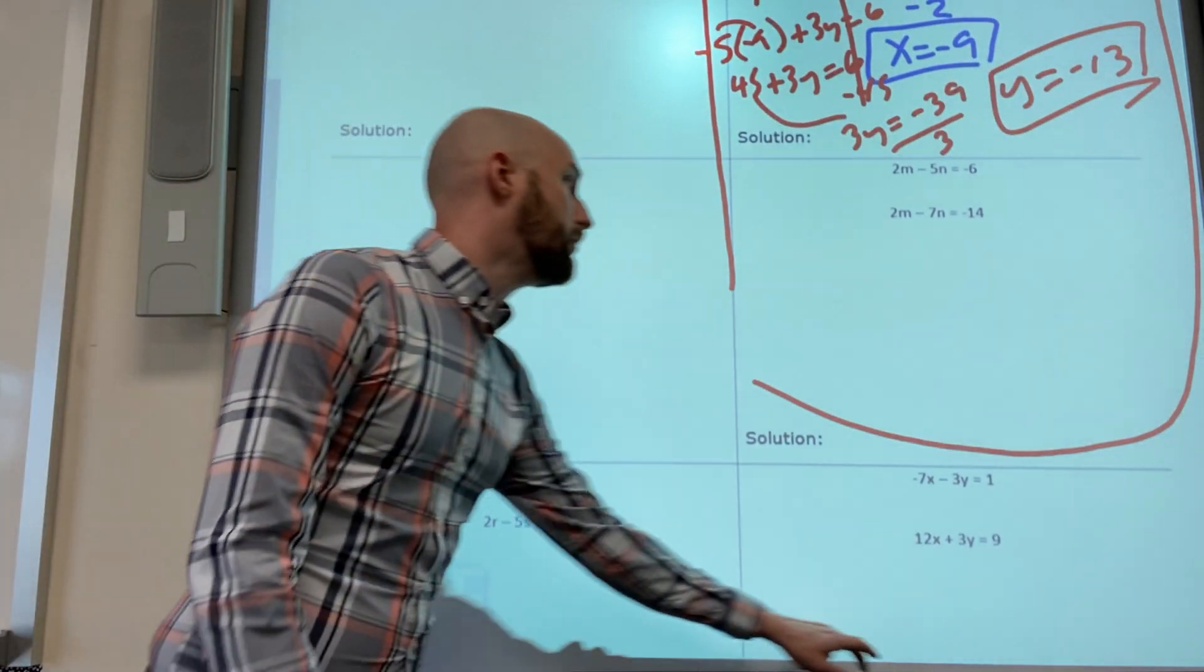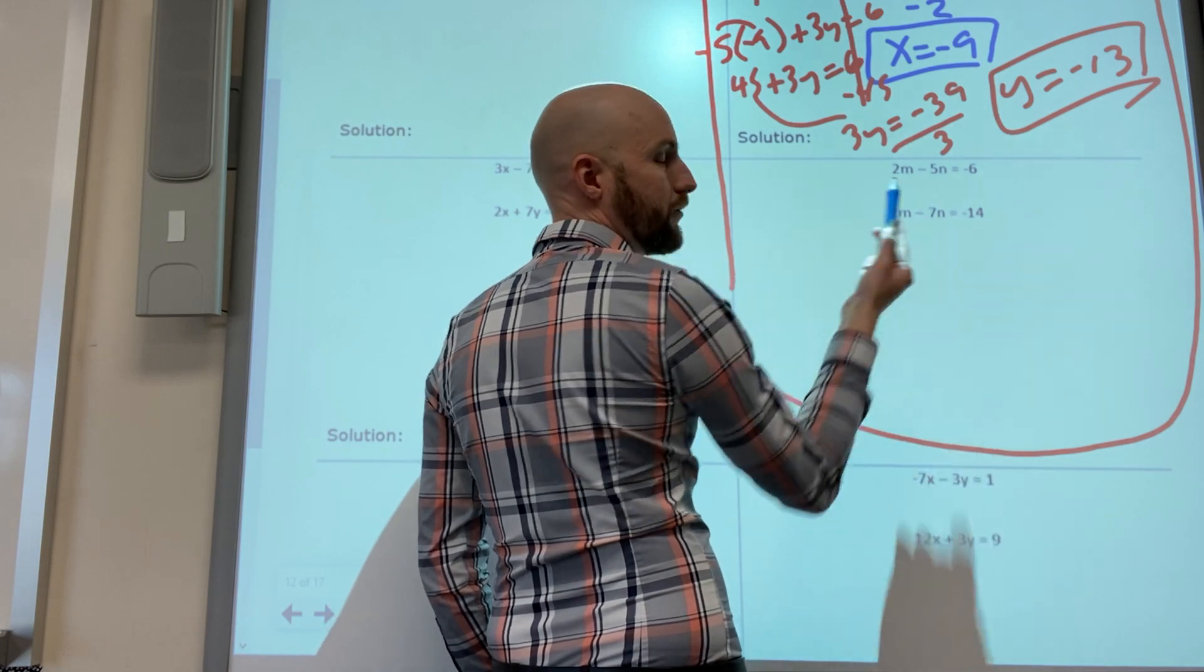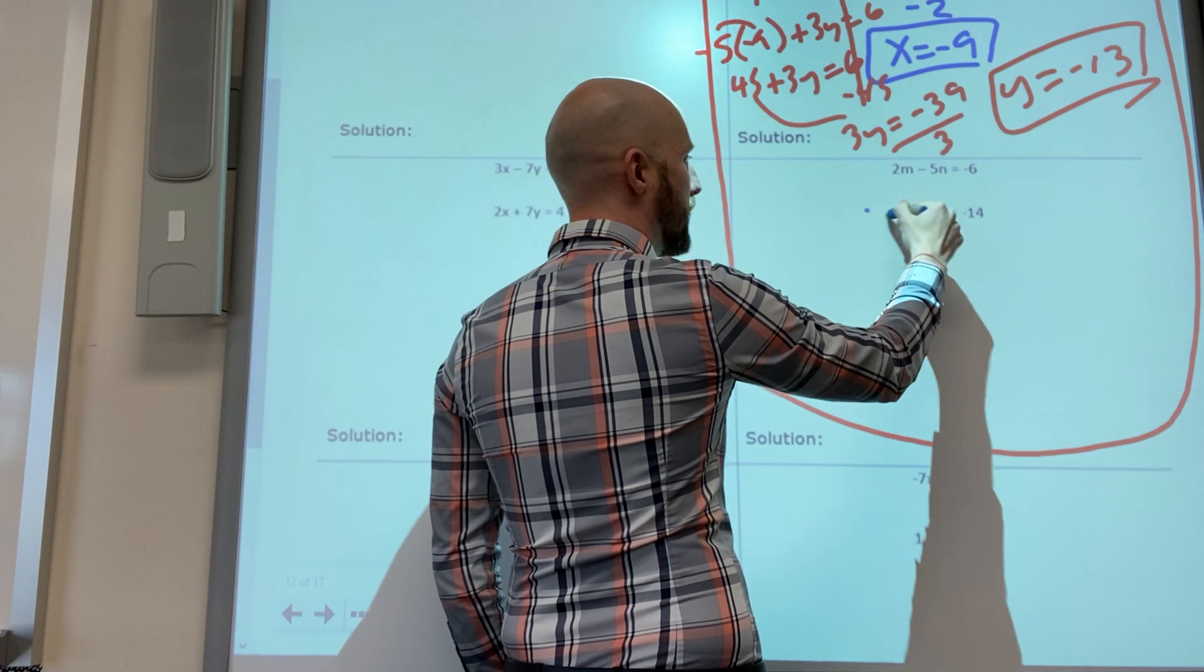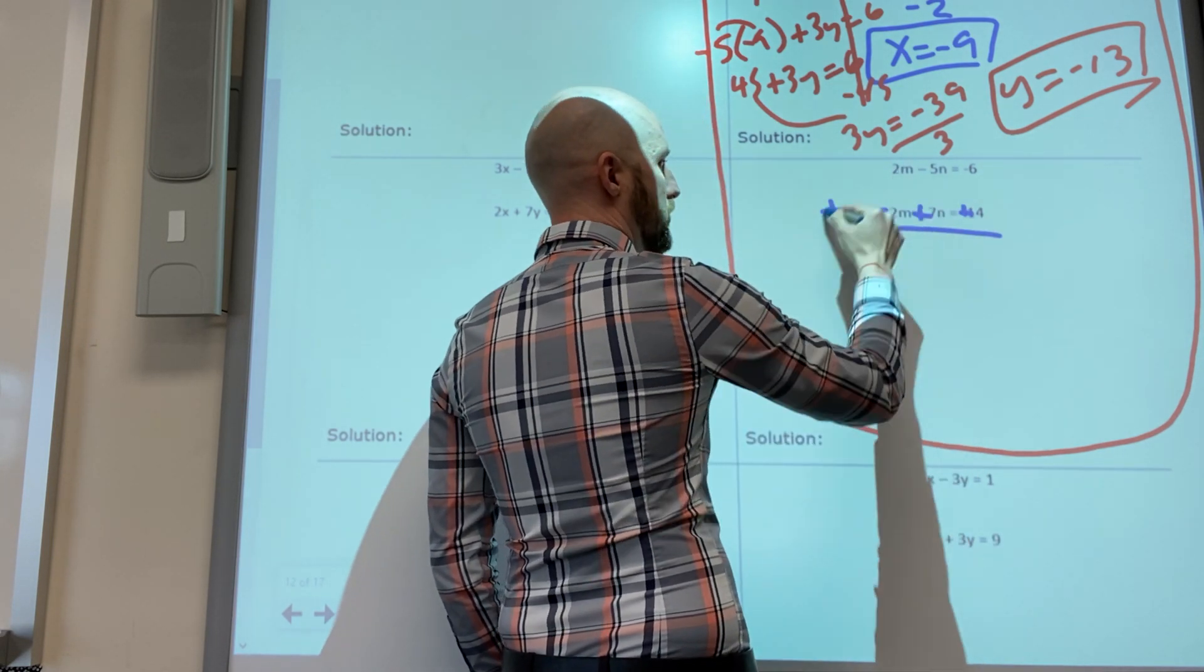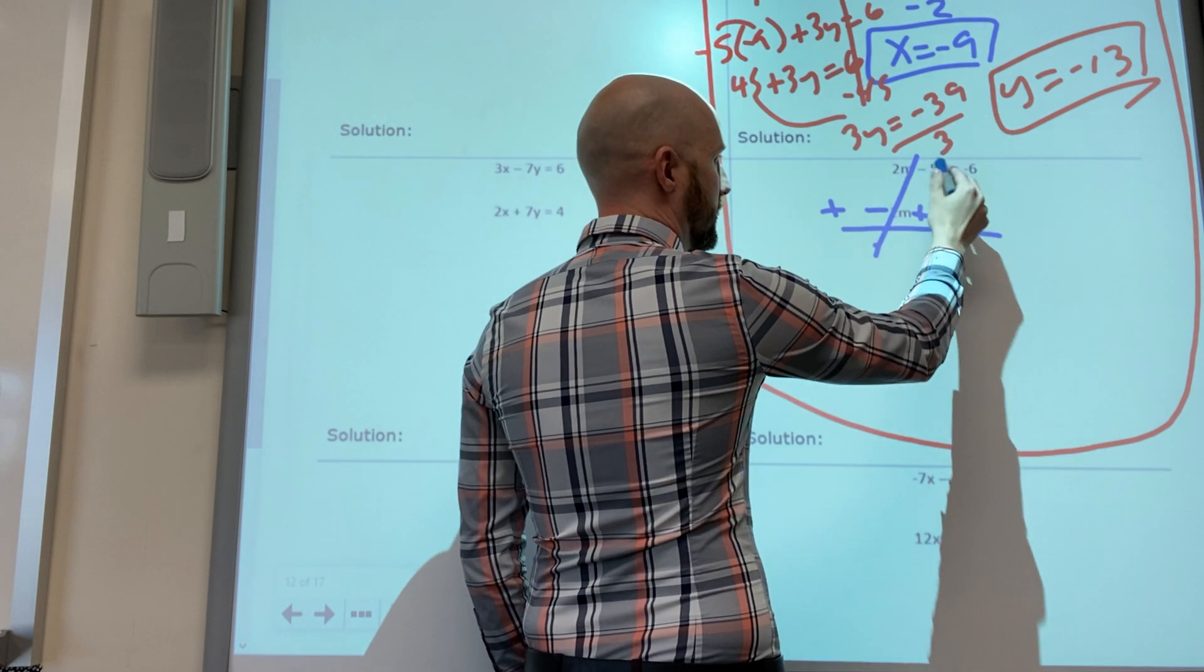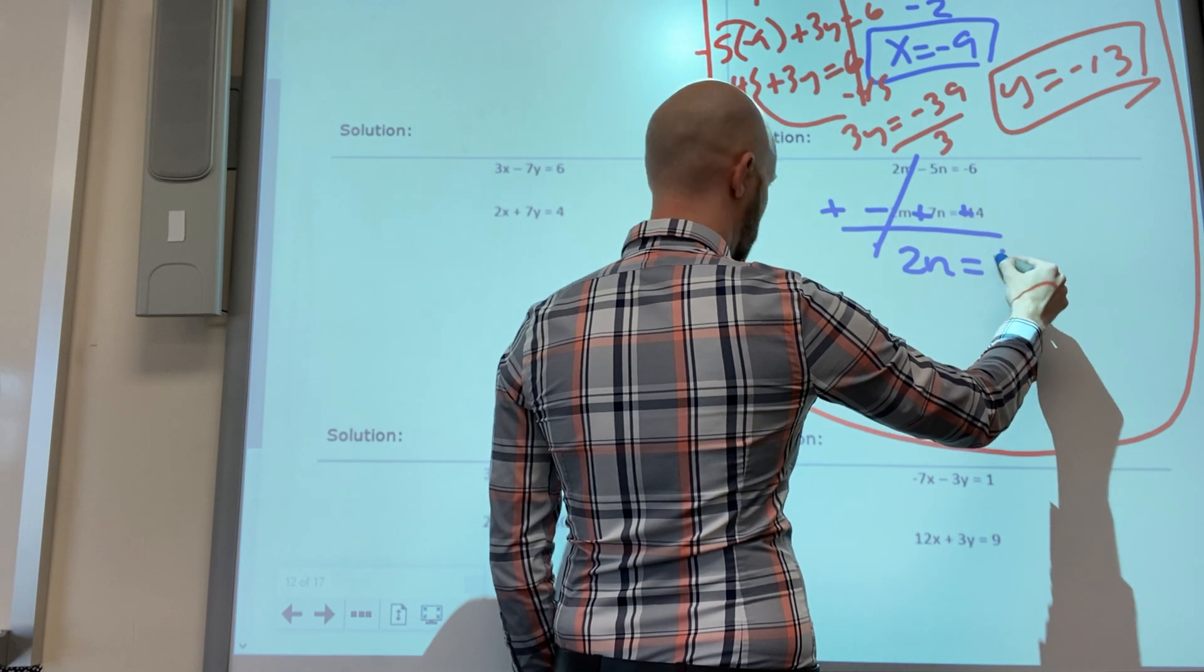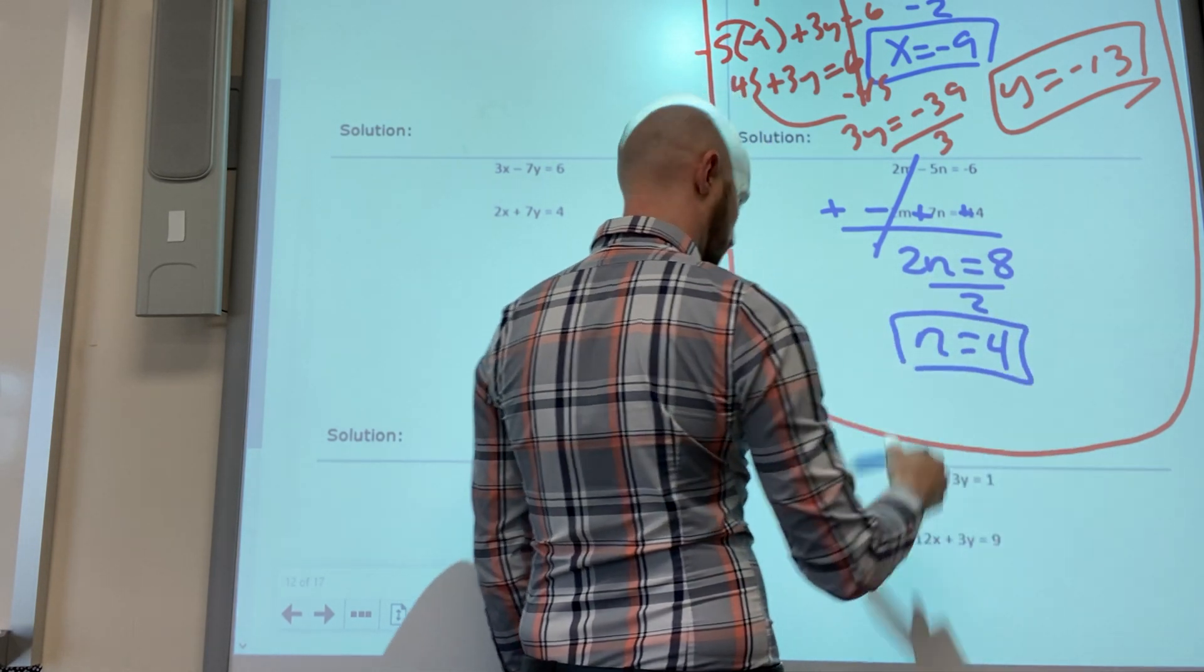This one here, it will not cancel now, two plus two is four so I have to change this one. Two minus two cancel, negative five plus seven is two, negative six plus fourteen is eight, divided by two is four.